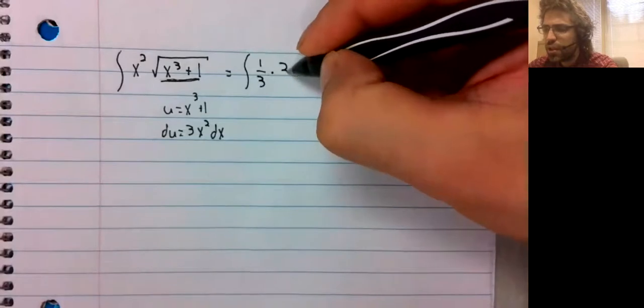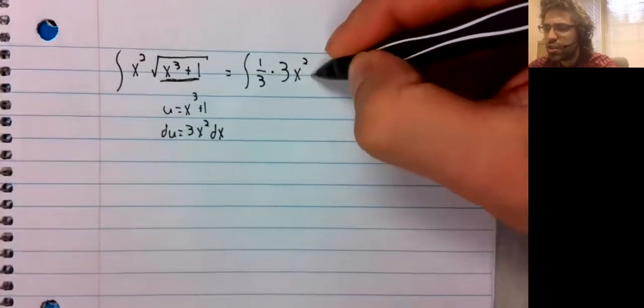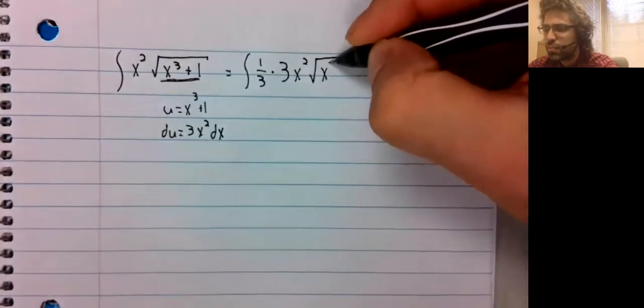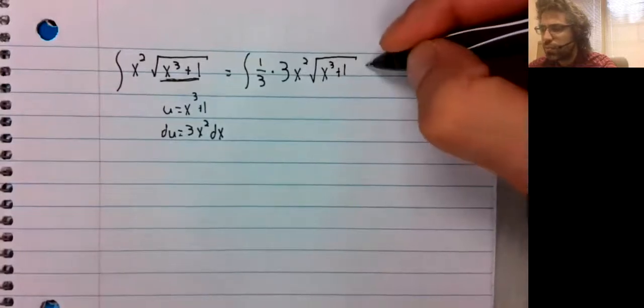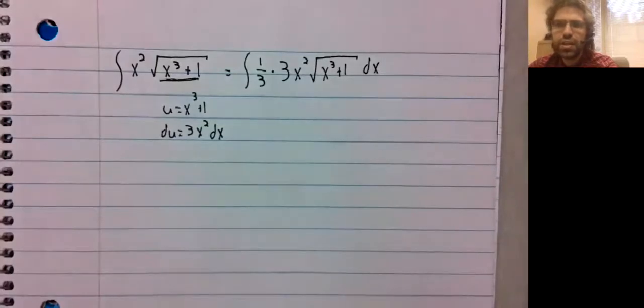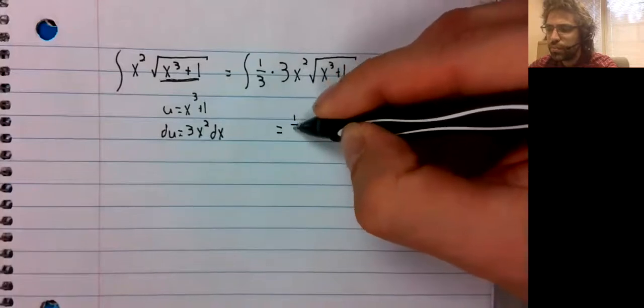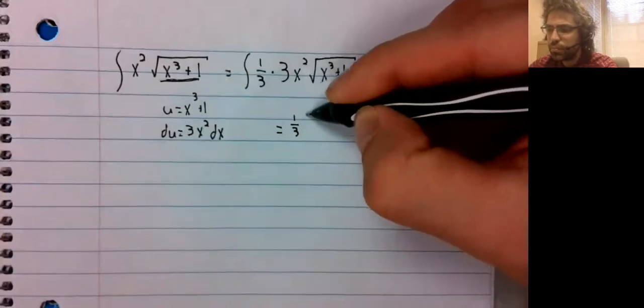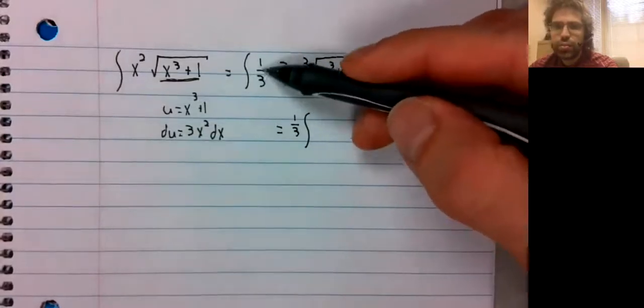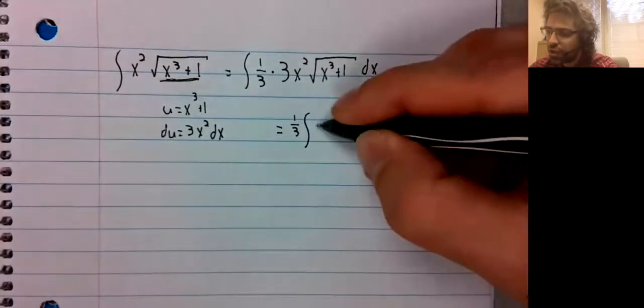We can put constants in where we need them to be. And then, of course, we put the reciprocal in if we just multiplied by three. We would change the integrand and we don't want to change the integrand.